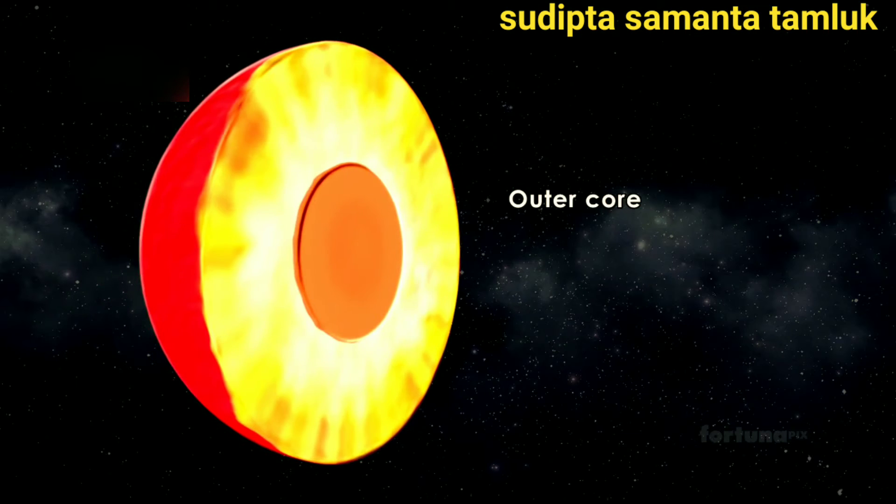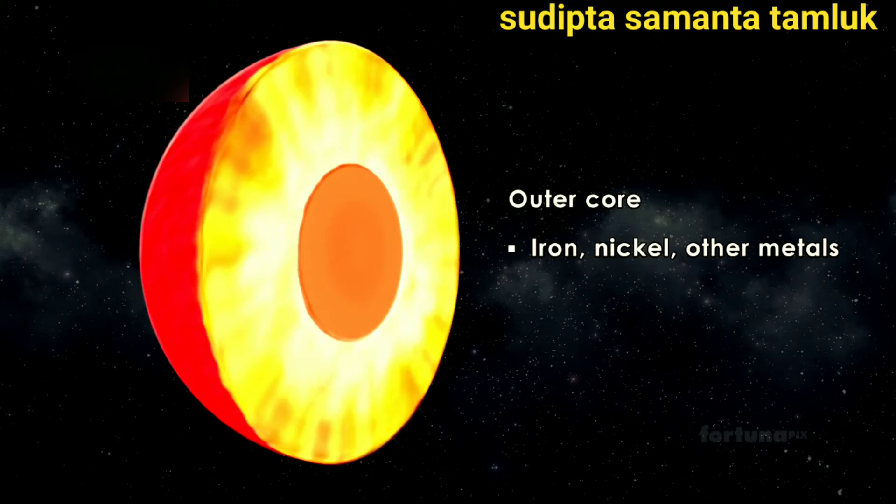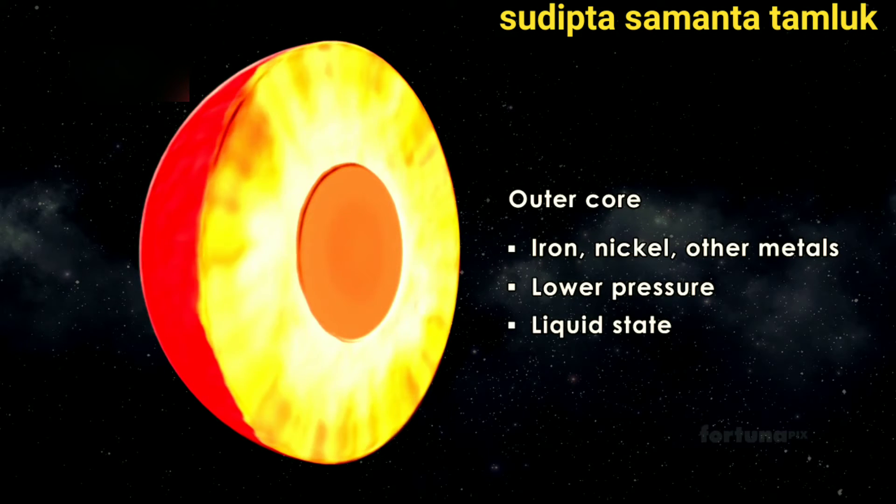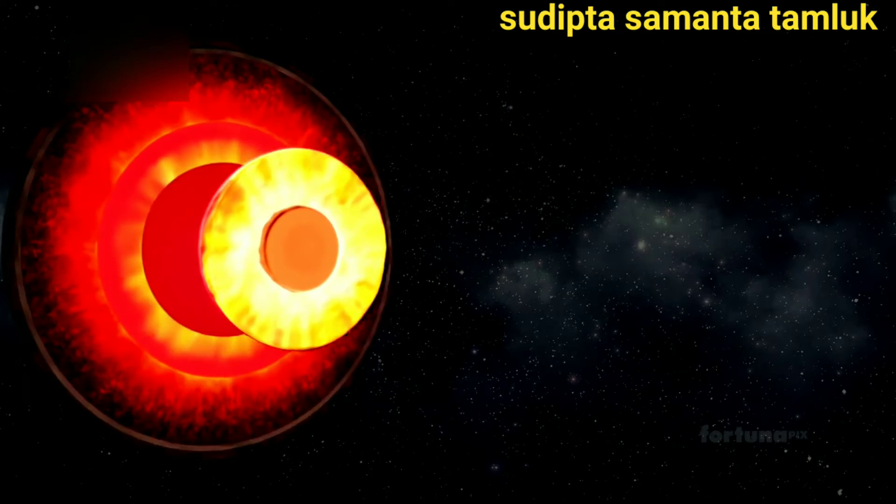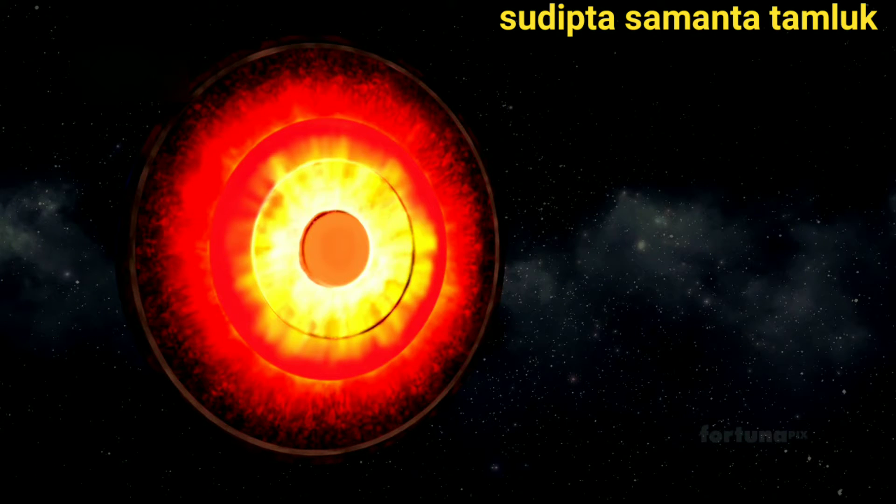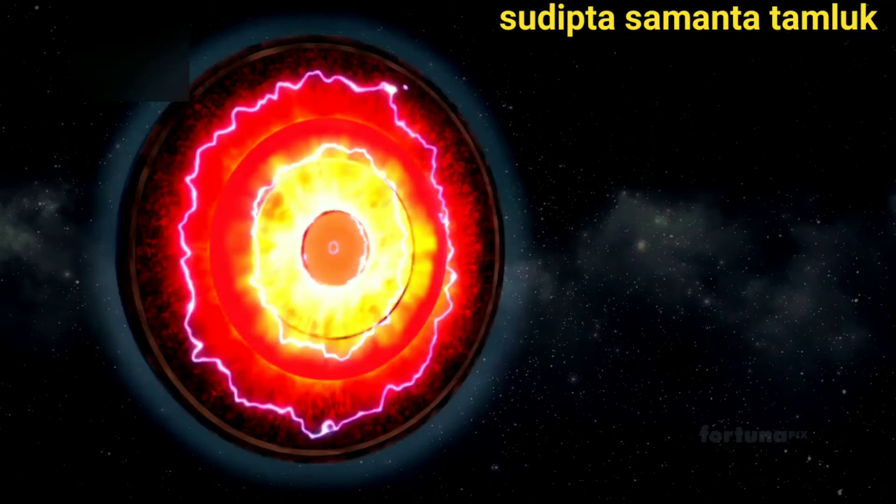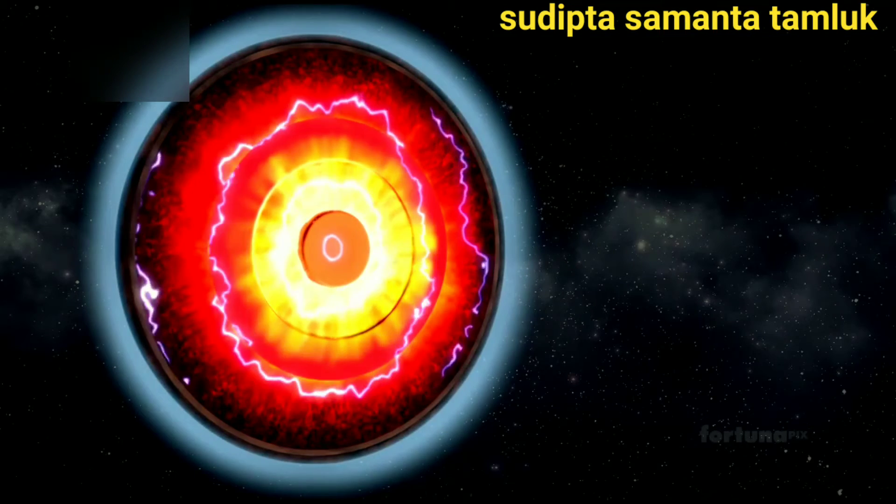Around this inner core is the outer core, a region composed of iron, nickel and small quantities of other metals. Unlike the solid inner core, the outer core has a lower pressure which allows the metals to exist in a liquid state. This liquid metal is continuously circulating due to Earth's spin and other forces. The movement of the liquid metal generates electric currents which then produce magnetic fields around these currents.